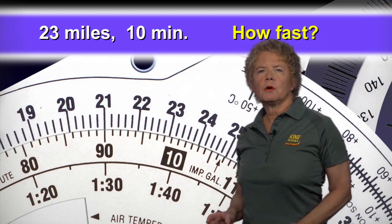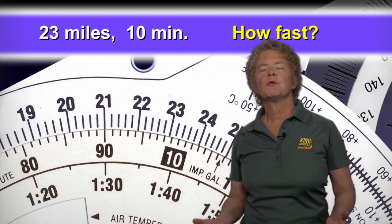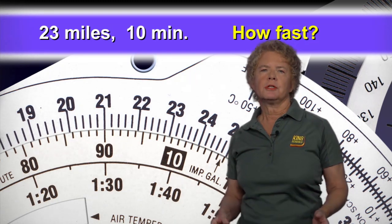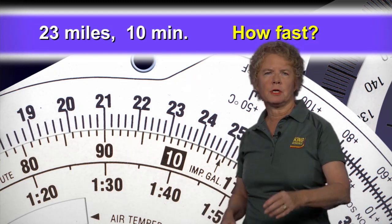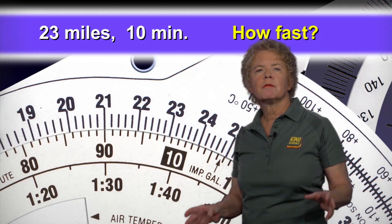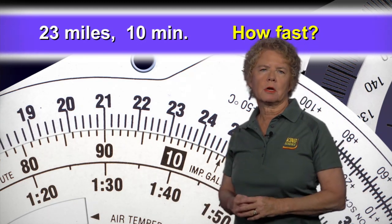To answer that question, we do just what we've been doing all along. We just put our speed on the flight computer. And you say, well, we don't know what the speed is. But sure we do, because we know we covered 23 miles in 10 minutes, and that's the rate at which we're covering the ground.